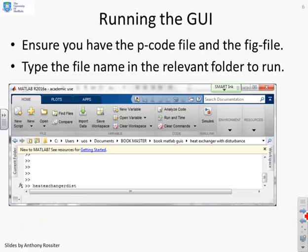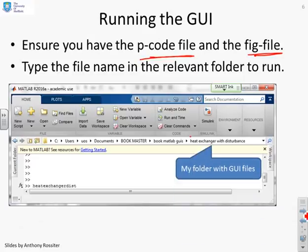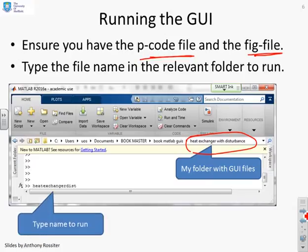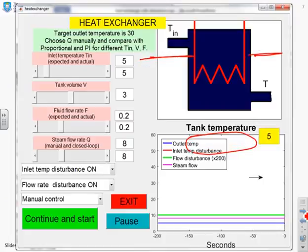Now to run the GUI it's fairly simple. Make sure you've got the P code file and the fig file which you can get from the website, and type the file name in the relevant folder to run. My folder is heat exchanger with disturbance and the file name is heat exchanger dist. You just type that name in the command window and the GUI will run.